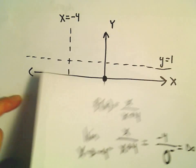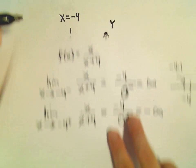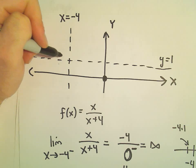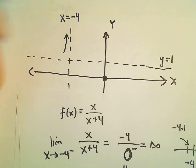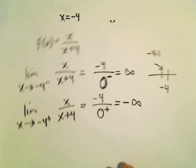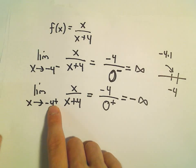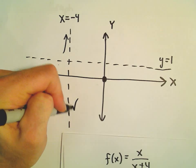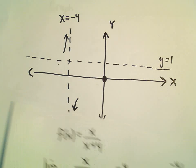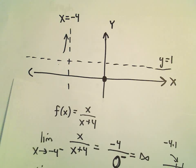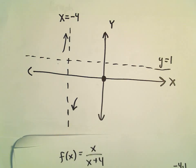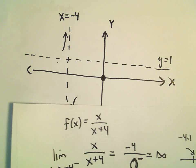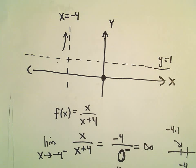Let's go ahead and put that on the graph — from the left it goes up to positive infinity, from the right it goes down to negative infinity. Now let's look at the first and second derivatives to figure out where the function is increasing or decreasing, and then we can also get some concavity information.